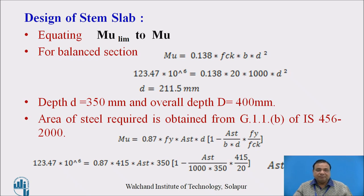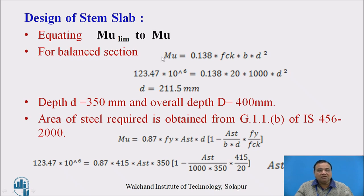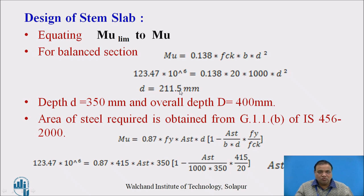Design of stem slab: We equate MU limit with MU. For a balanced section with Fe415 steel, MU limit is given by 0.138 fck b d squared. Equating this to MU, the required depth works out to 211.5 mm.